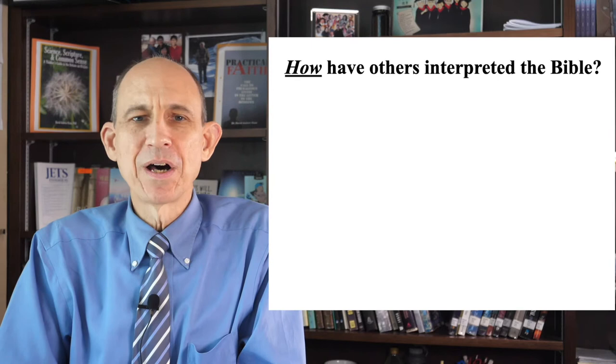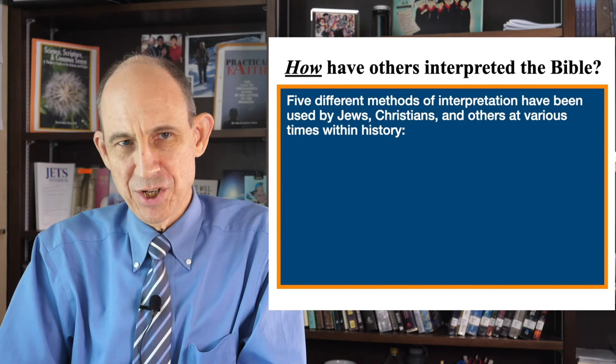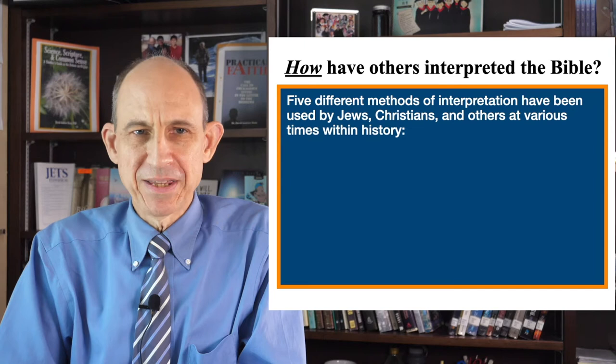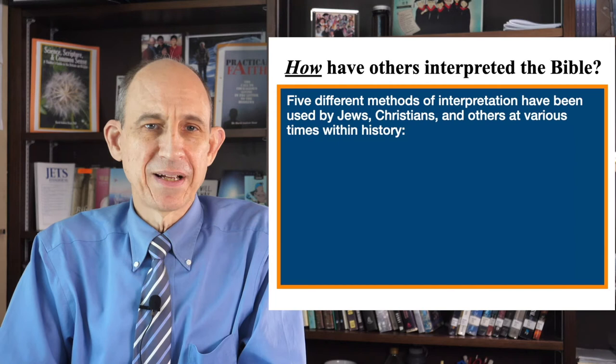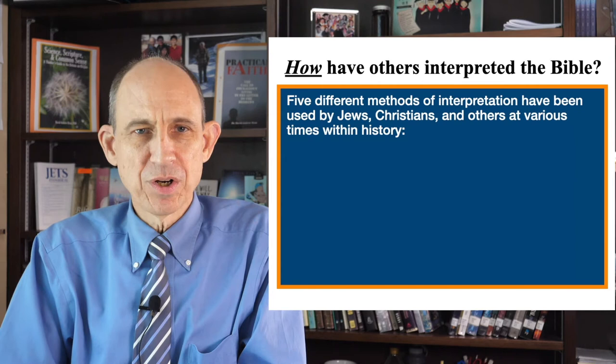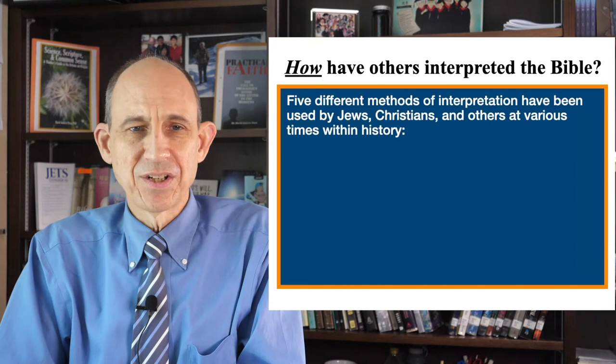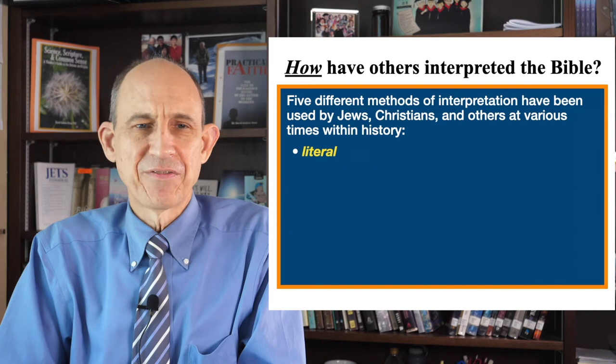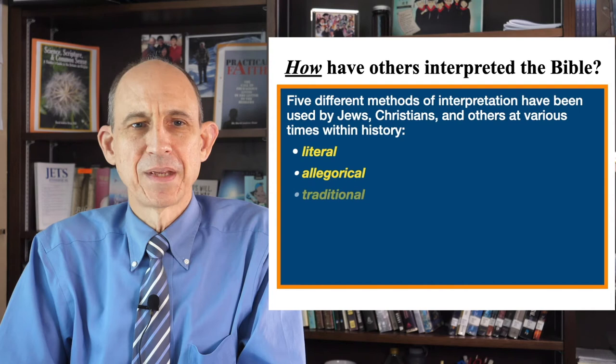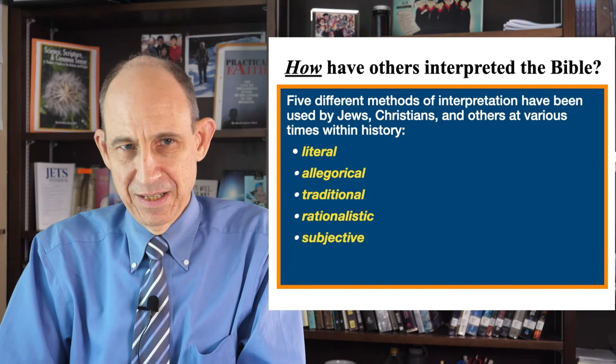Now I want to move on to the question of how others have interpreted the Bible — the history of Bible interpretation. Basically, five different methods have been used by Jews, Christians, and others at various times in history, and we'll see that the interpretation of other kinds of literature has also affected the way believers have interpreted the Bible. Here's a list of the five methods: literal interpretation, allegorical interpretation, traditional interpretation, rationalistic interpretation, and subjective interpretation.